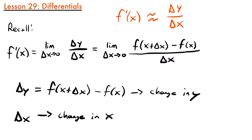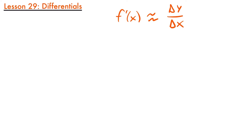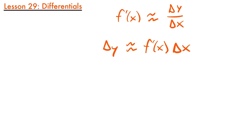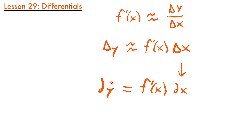If we clean up our work a little bit here, we can rearrange this approximation by multiplying both sides by delta x to find that delta y is approximately equal to the derivative f prime of x times delta x. Now delta x is typically denoted with dx, and dx is called the differential of x. We would then denote f prime of x times dx with dy, and this is called the differential of y.